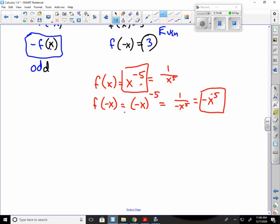Now we check to see if it's odd. To see if it's odd, we put a negative in front of everything and see if it matches up with f of negative x. So I take my original function and I put a negative in front of it. Negative x to the negative 5th. This is the same as this one, which makes this an odd function.